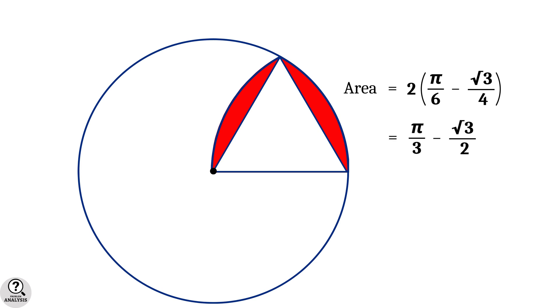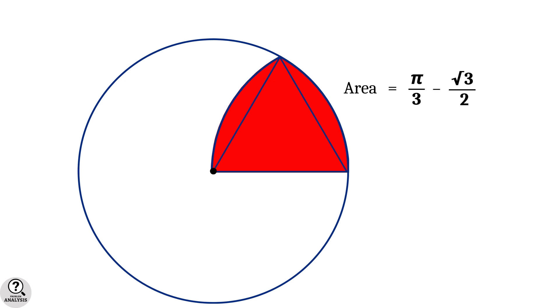For the solution of our actual problem, we wanted to find the area of the entire curved triangular shape. So along with pi by 3 minus root 3 by 2, add the area of this equilateral triangle also, which is equal to root 3 by 4. So the total area of this shape is pi by 3 minus root 3 by 4 square units.